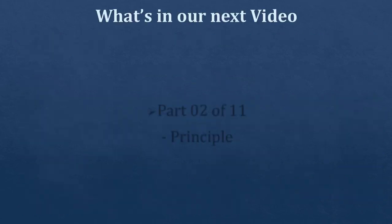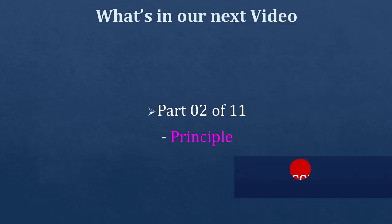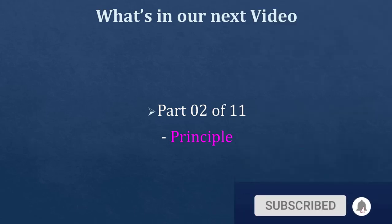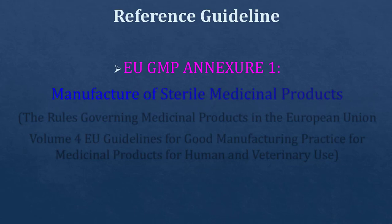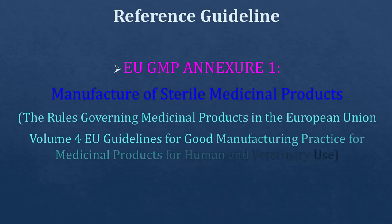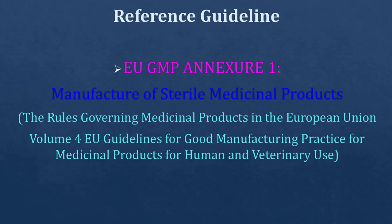In our next video, Part 2 of 11, we will discuss the Principles of EU GMP Annex 1. The reference guideline is EU GMP Annex 1 - Manufacture of Sterile Medicinal Products: The Rules Governing Medicinal Products in the European Union, Volume 4: EU Guidelines for Good Manufacturing Practices for medicinal products for human and veterinary use.